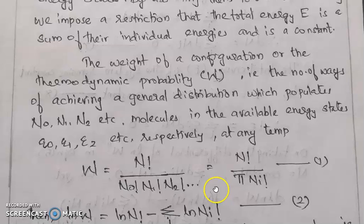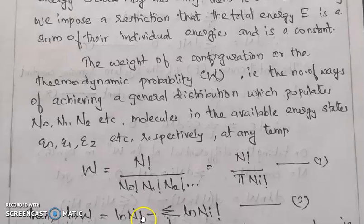Taking the natural log: ln W equals ln N factorial minus the sum sigma i of ln Ni factorial. That is equation number 2.